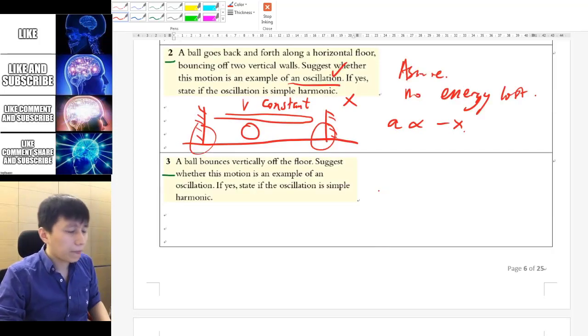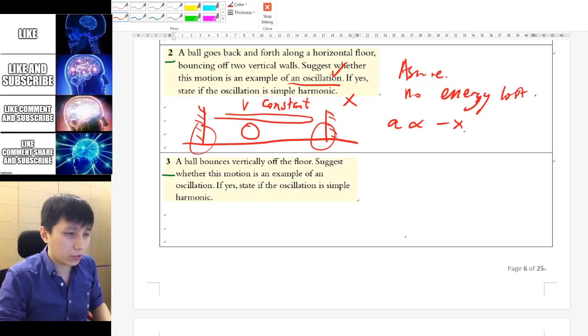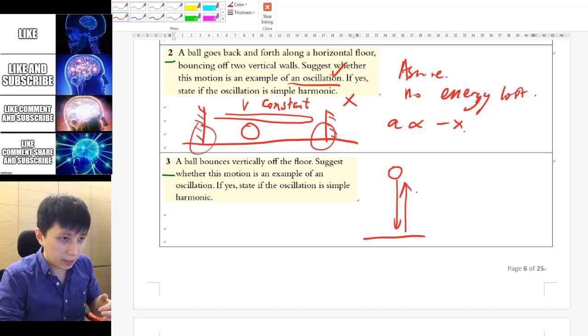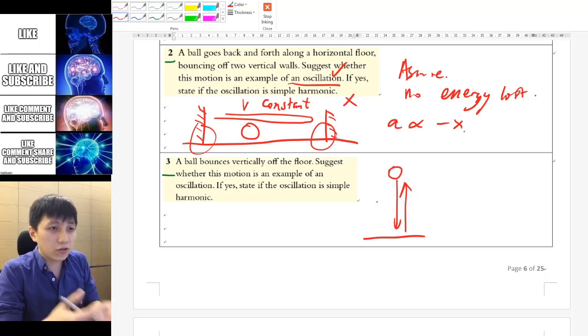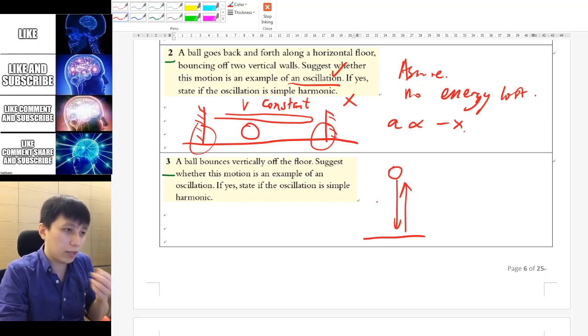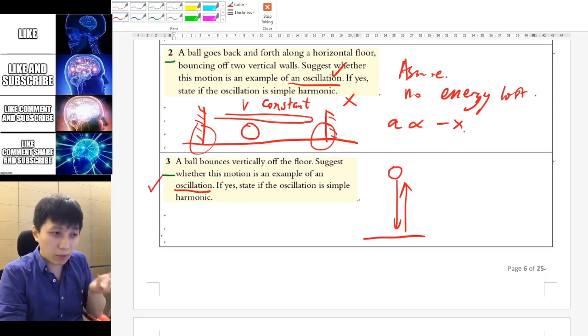The velocity will simply be constant when there's no net force. So when there's no change in velocity then obviously there's no acceleration. It's zero simply, so obviously it's not SHM. Question number three. So this question is basically turning 90 degrees of question two which you have a ground and then the ball falls down and bounces back up.